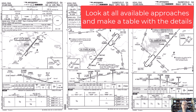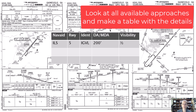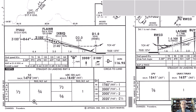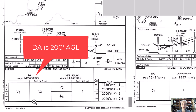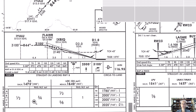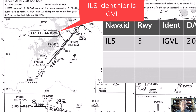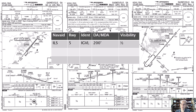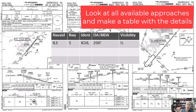I'm going to write down my NAVAID, the runway it goes to, the identifier, the decision altitude or MDA, and then my visibility required for that approach. For the ILS to runway five, it has a DA of 200 feet and visibility for all categories is half a mile. The identifier is IGVL, and it goes to runway five.